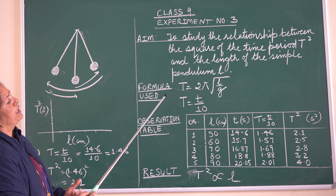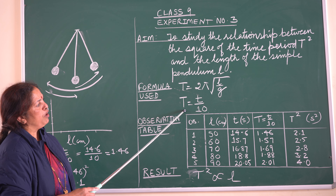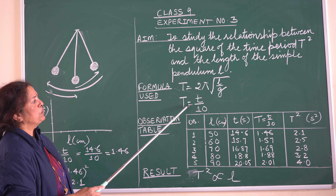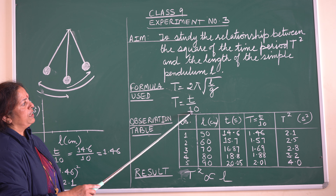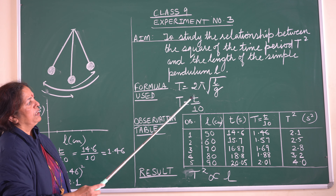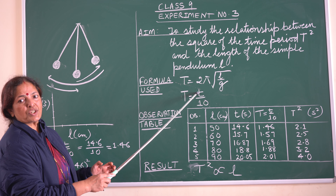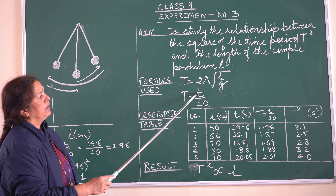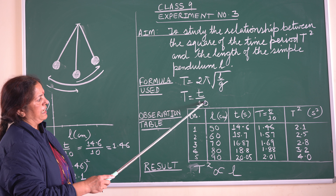For this particular experiment we will be making more use of a second formula: T = t/10, where T is the time period for the simple pendulum, t is the time taken for 10 oscillations of the simple pendulum, and 10 is the number of oscillations taken.